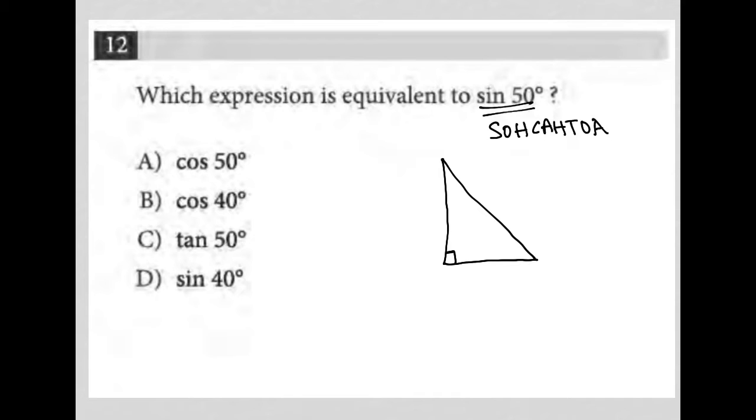So if I'm looking at sine of 50, that means one of my angles must have been 50 degrees. If I have a right triangle, that means my other angle must be 40 degrees, right? Because all three angles—50 plus 40 plus 90—have to add up to 180 degrees.